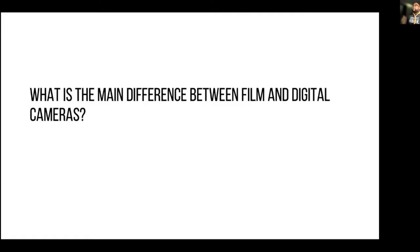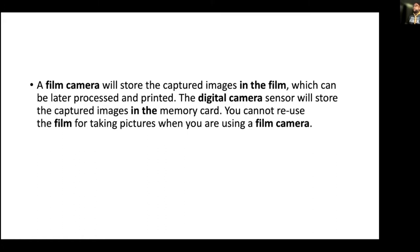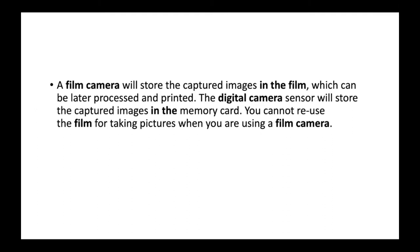So what's the main difference between digital and film photography? A film camera — like the one I have in my hands — stores captured images on film, which can later be processed and printed. A digital camera, which can be your phone, a Canon, a Nikon, or a Sony, stores images on a memory card. With film, once you take the picture, you cannot reuse the film — you can only use it once.